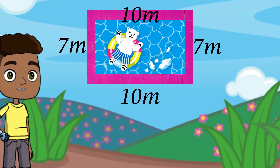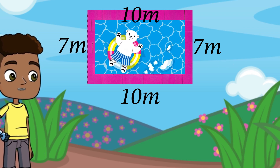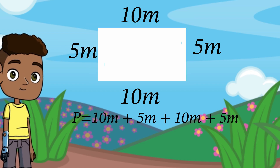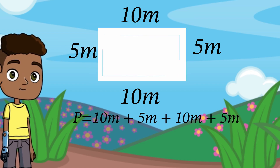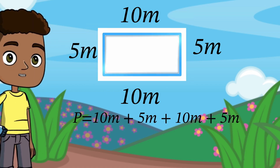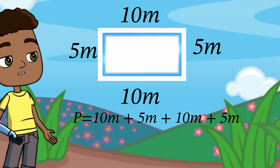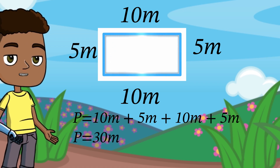Now let's calculate the perimeter using addition. That's 10 meters plus 5 meters plus 10 meters plus 5 meters equals 30 meters.